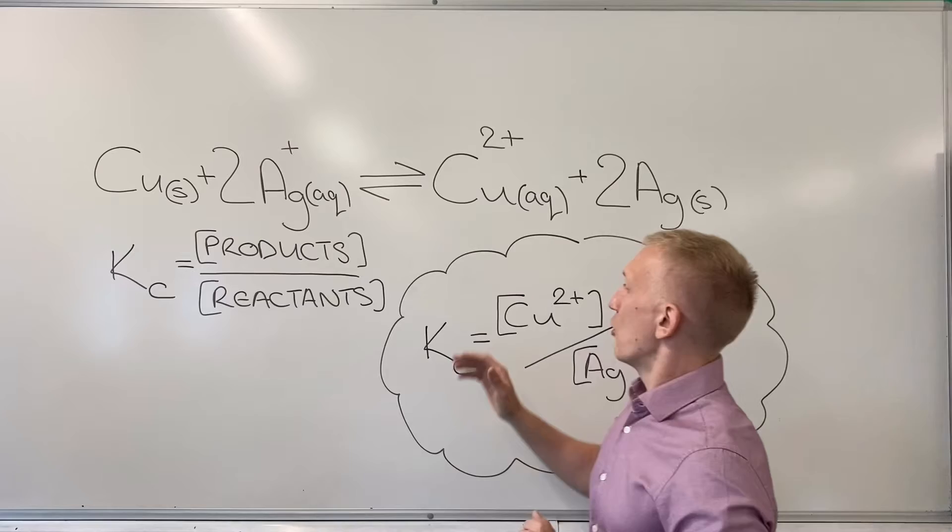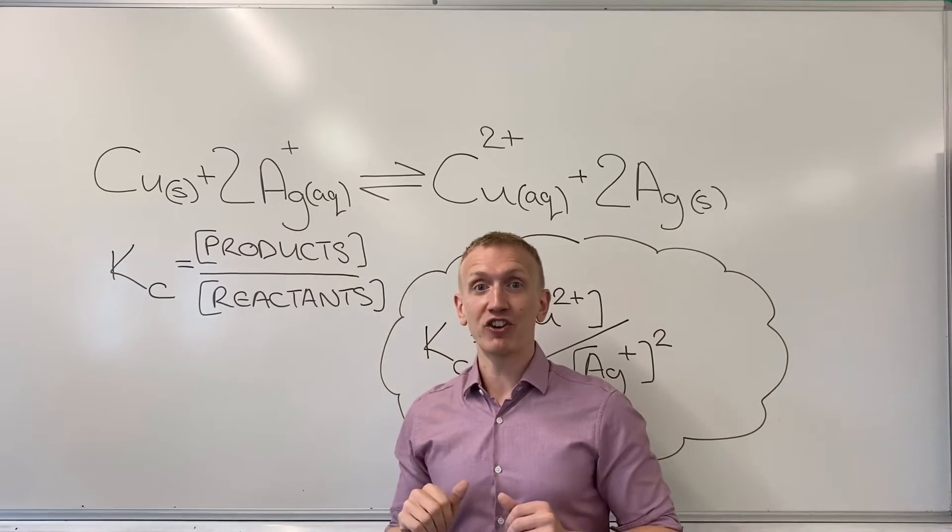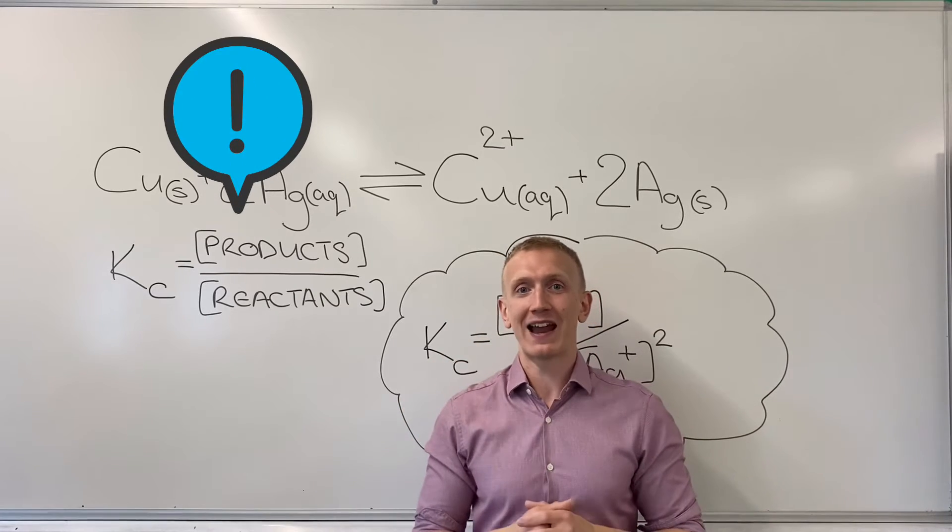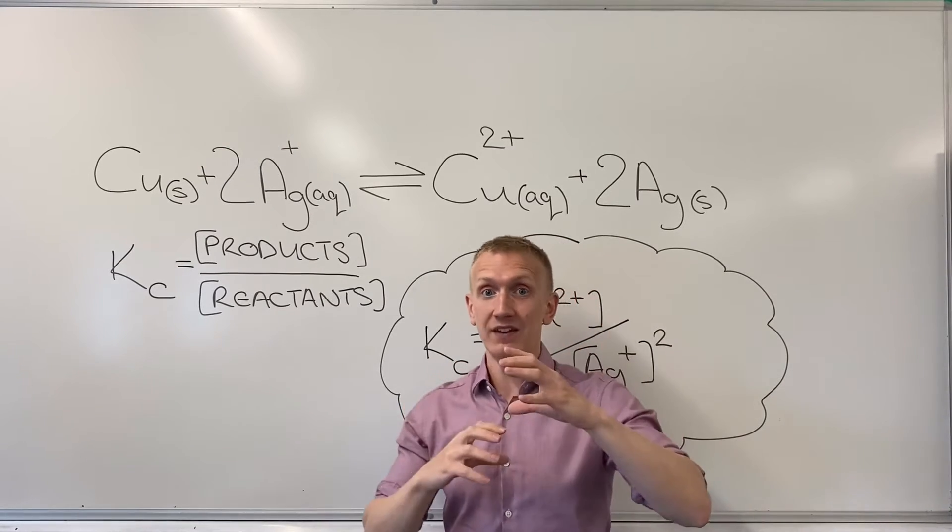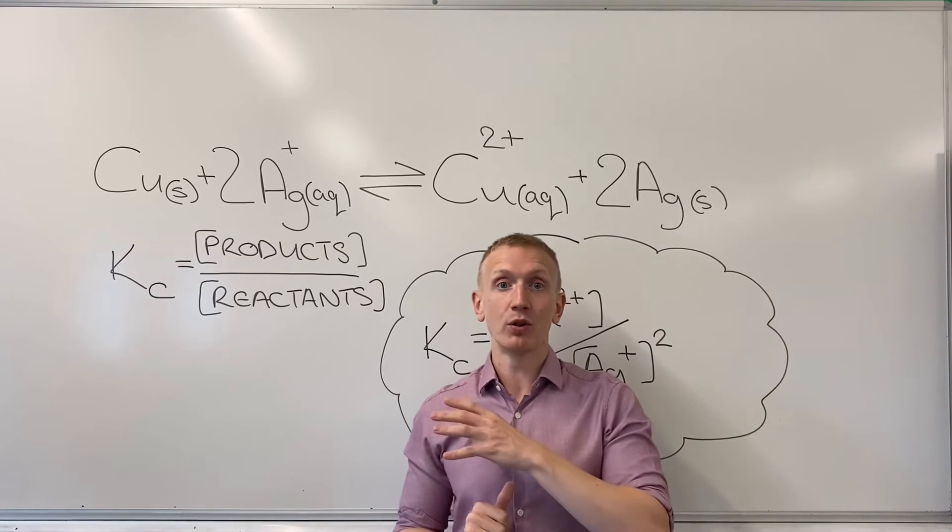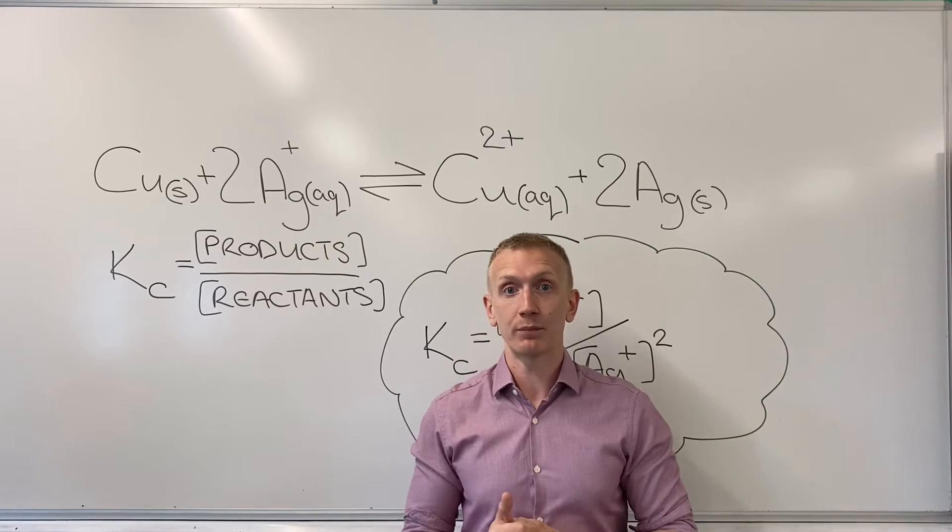So when we write our KC expression, remember that it's always going to be concentration of the products divided by concentration of the reactants. And you only put in those which don't have a solid or liquid state symbol when you're looking at a heterogeneous equilibrium like this one.